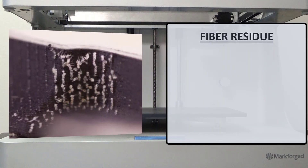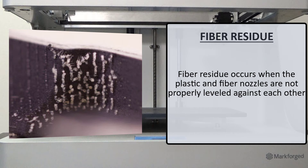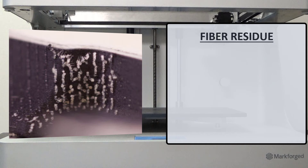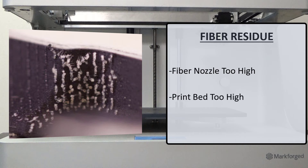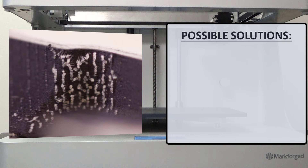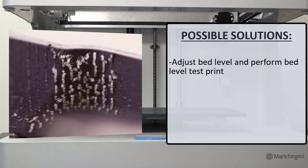What can be done if we experience fiber residue like the example shown? Fiber residue occurs when the plastic and fiber nozzles are not properly leveled against each other. Residue often presents itself as small blobs of material on the outside of the part. Generally, residue will only appear on the faces of the part at which the print head finishes its toolpath. Common causes could be that your fiber nozzle is too high or that your print bed is too high. The recommended troubleshooting steps would be to adjust the bed level, run the bed level test print, and then run the fiber nozzle height utility to correctly set the height of your fiber nozzle.